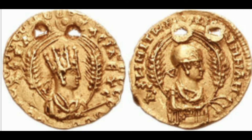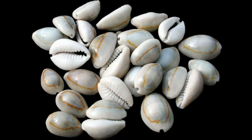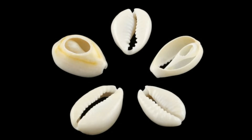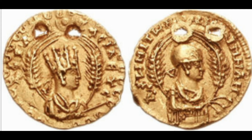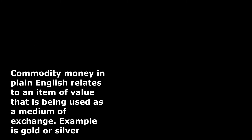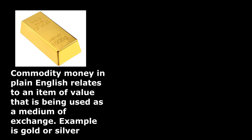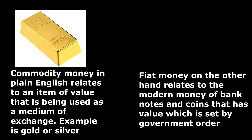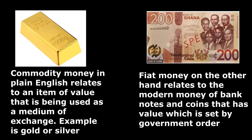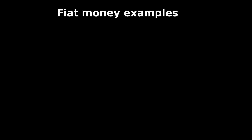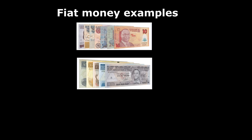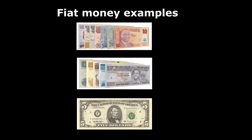Some of the currencies in pre-colonial Africa mediated some, if not all, of those functions of money. There are four types of money, but I will just discuss two of them: commodity money and fiat money. Commodity money in plain English relates to an item of value that is being used as a medium of exchange — for example, gold or silver. Fiat money, on the other hand, relates to modern money such as banknotes and coins that do not have intrinsic value but have value set by government order — for example, the Nigerian Naira, the Ethiopian Birr, or the most popular currency in the world, the United States Dollar.